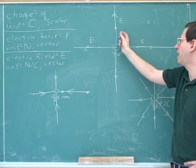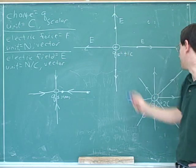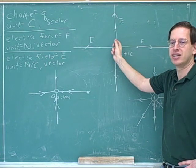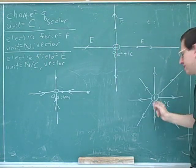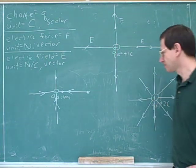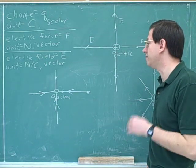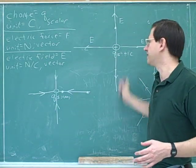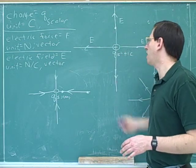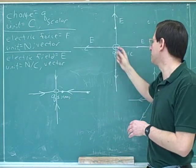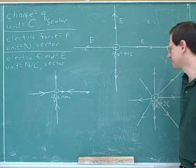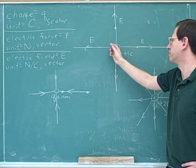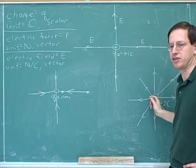If I've decided to draw four lines when there's a plus one Coulomb charge, then when I double the charge I have to draw eight lines. If I felt like it, I could have drawn eight lines for the plus one charge — but if I had drawn eight lines there, I would have to draw 16 lines for the doubled charge. In reality there's an infinite number of electric field lines in every picture, but we only draw a finite number, and that finite number is proportional to the charge.